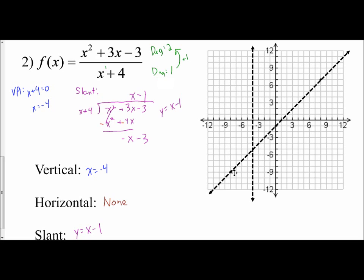So we now have our vertical and slant asymptotes drawn. As always, let's find the y-intercept by setting x equal to 0: 0 squared plus 3 times 0 minus 3 over 0 plus 4, which gives negative 3 over 4. So when x is 0, y is negative 3/4 — plotted right here, very close to the slant asymptote.